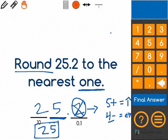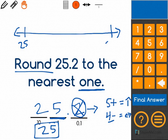Another way you could look at this is to create a number line that starts at the whole number 25 and goes to 26, because we know 25.2 is in between those numbers.